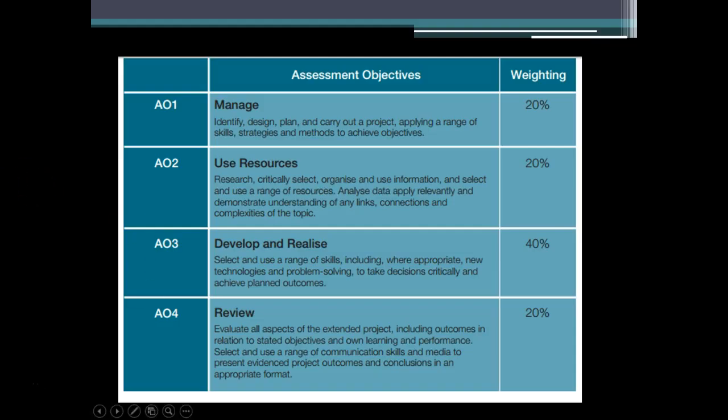AO1 is 'manage' — this is to do with how well you actually achieve what you say you're going to do. Very soon we're going to write a timeline where you plan your whole life and commitments — rugby matches, family holidays — and work out how you're going to finish this before October. That will be graded primarily through your production log and your research diary. AO2 is your use of resources — making sure you're using high-level material, and that you footnote, reference, and have bibliographies.